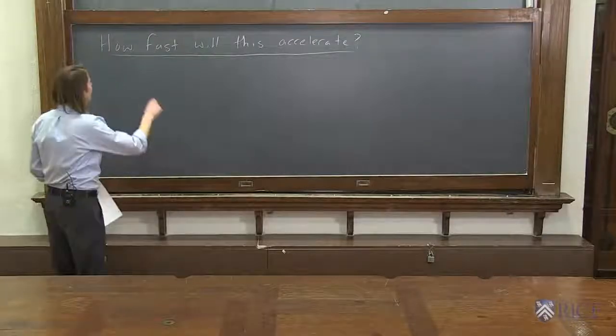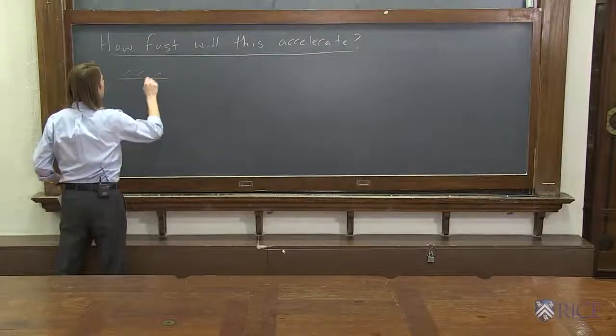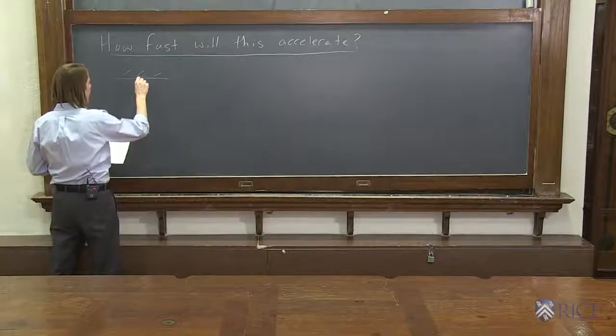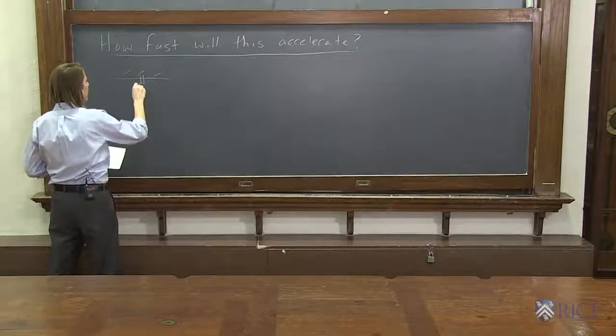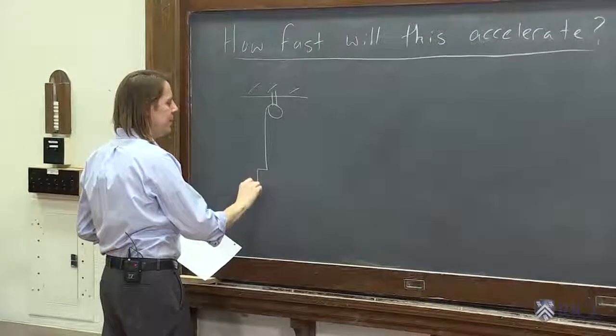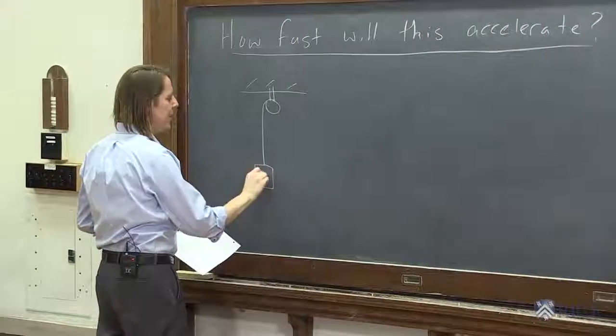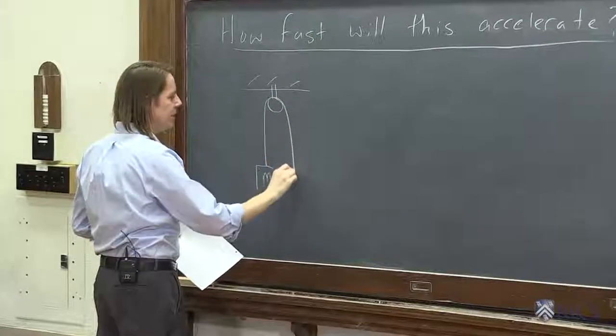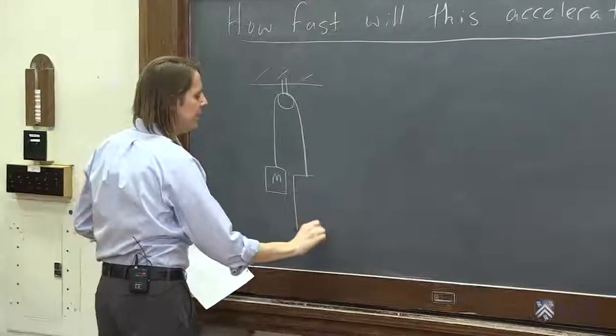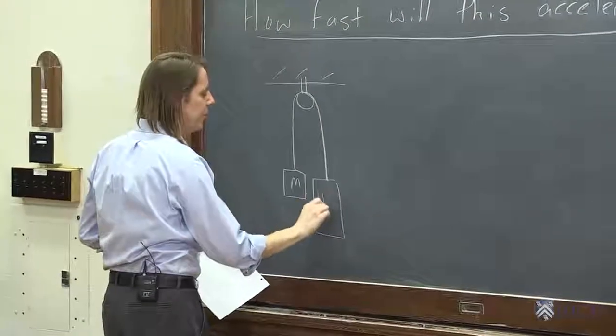In this problem, we're going to figure out the acceleration of something where we have a pulley like that, and one side is hanging a mass m, and from the other side is hanging a mass 4m.